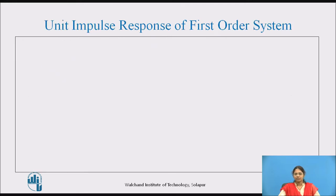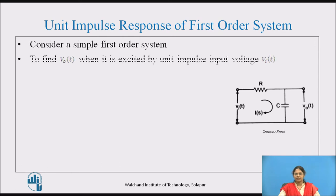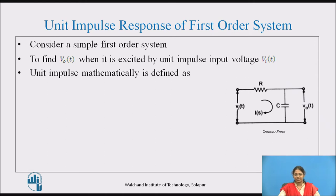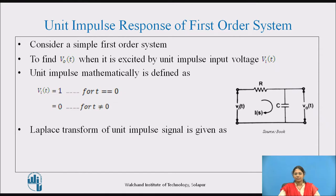Now let's see what the unit impulse response of a first-order system is. Consider a simple first-order system. The main task is to find the output voltage when it is excited by the unit impulse input voltage Vi(t). Unit impulse is mathematically defined as Vi(t) = 1 for t = 0, and Vi(t) = 0 for t ≠ 0. The Laplace transform of the unit impulse signal is Vi(s) = 1.